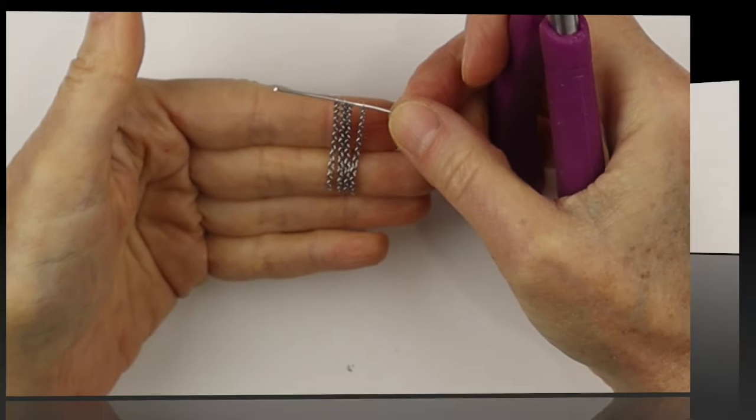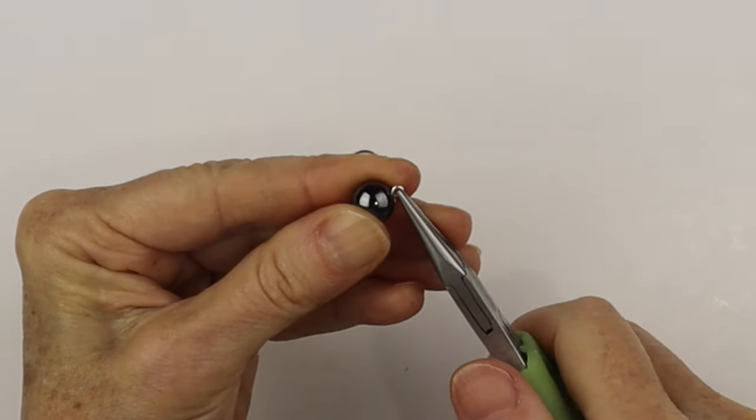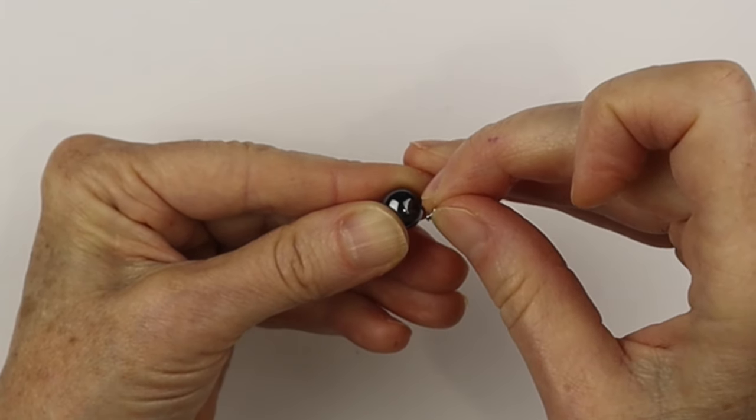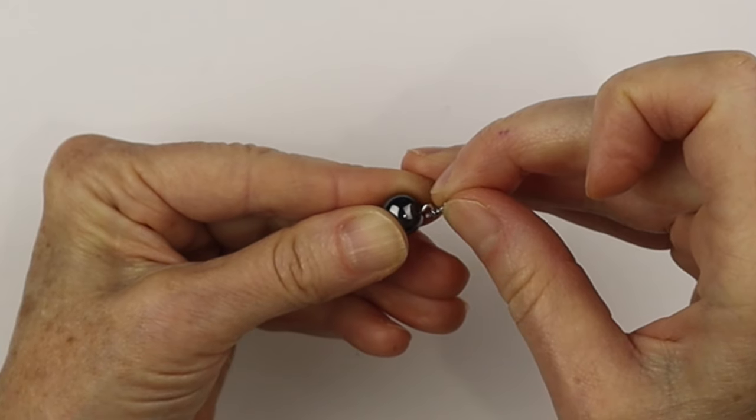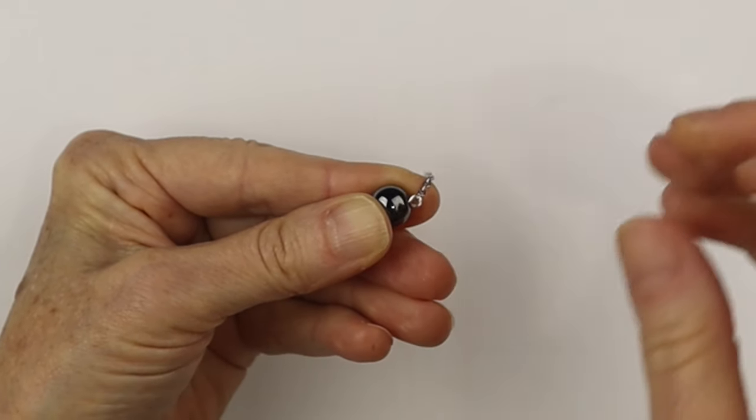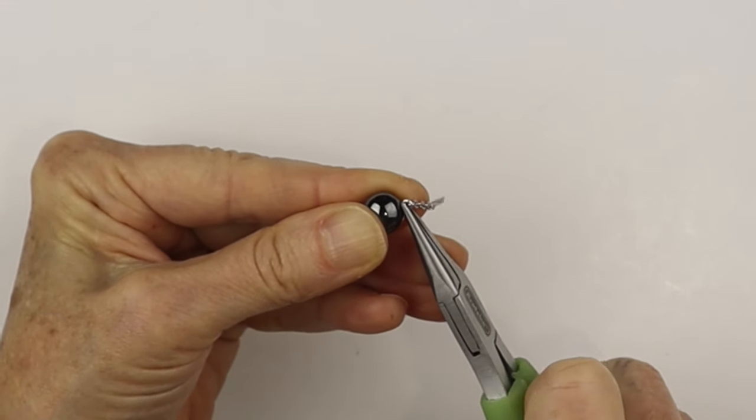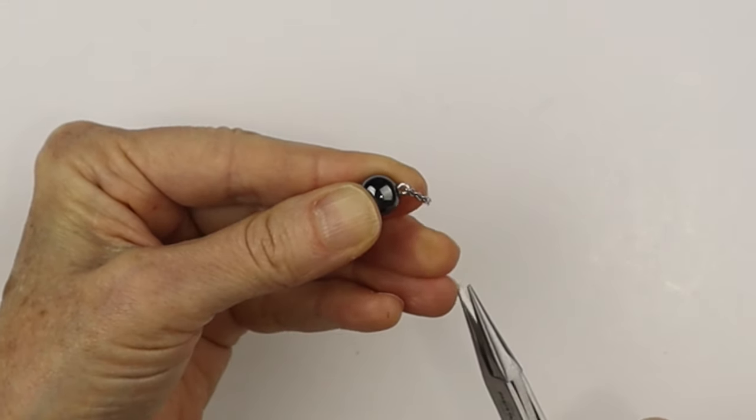So from there, we're just going to get our bead and we're going to open up the loop and slide on a chain. And then we'll close up that loop. Make sure it's fully closed. We don't want the chain to come off.